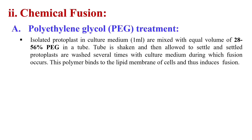Next, chemical fusion. When we use certain chemicals for protoplast fusion, that method is known as chemical fusion. The first chemical most commonly used is PEG — polyethylene glycol. PEG is a very potent fusogen and it has a molecular weight of 1500 to 6000 Dalton. Generally, a polyethylene glycol solution of about 28% to 56% is used for protoplast fusion.